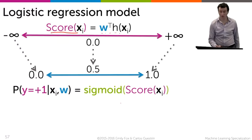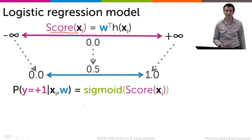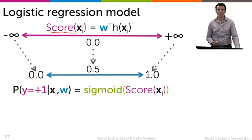It pushes it through the sigmoid function to estimate the probability that y is equal to plus 1 given xi and w.